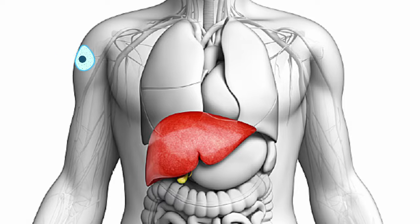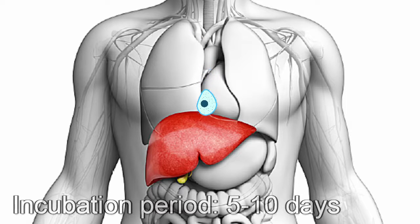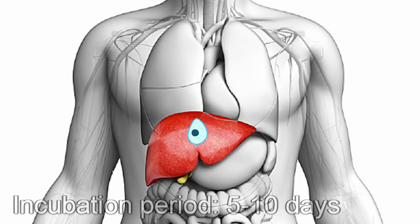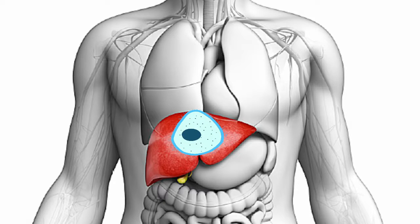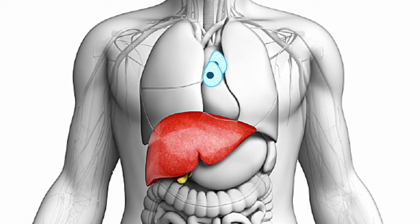Once the Plasmodia enter their human host, the blood moves them into the liver. They remain in the liver for around a week depending on their species, although some species are known to lie dormant for years. As they mature, the parasitic cells grow, creating large cells with thousands of nuclei. When ready, the cell will divide into an equal number of merozoites, all of which will be released into the bloodstream on the hunt for hemoglobin.